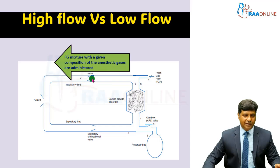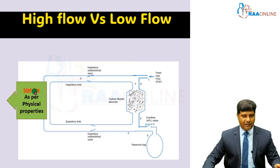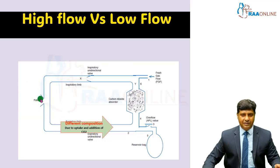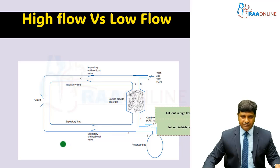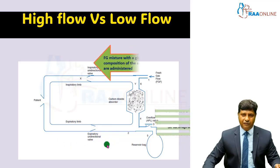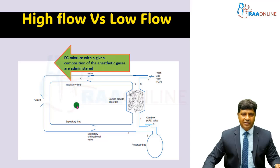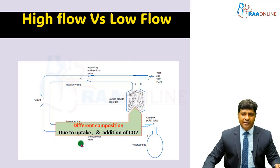The gases enter the inspiratory limb through the unidirectional valve, then some of them are taken up as per their physical properties, and the remaining gas comes back from the lungs into the expiratory limb. If the flow is much higher than or equivalent to the minute volume, the majority of gases are vented out. But when we reduce the flow, after the uptake, the exhaled gases are rerouted back into the circle absorber.